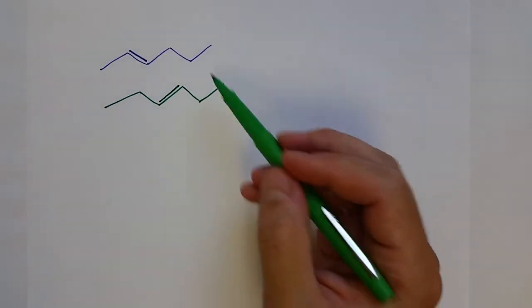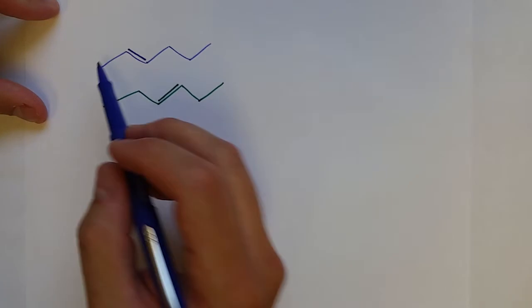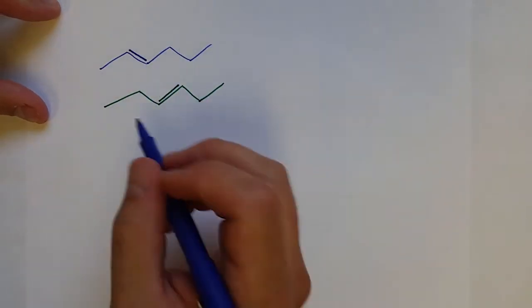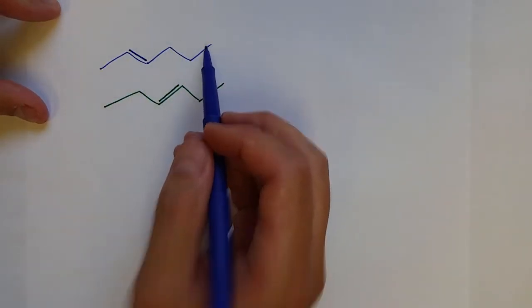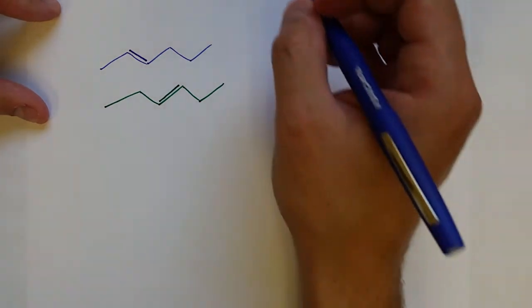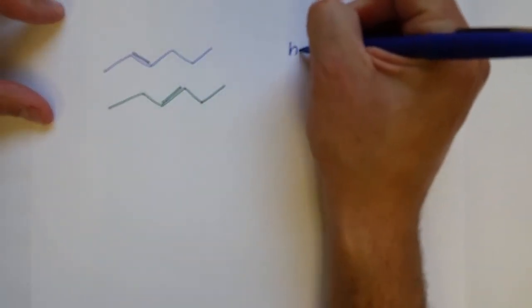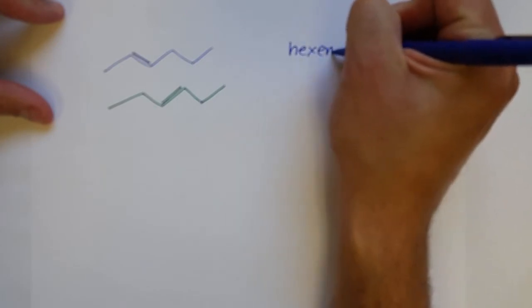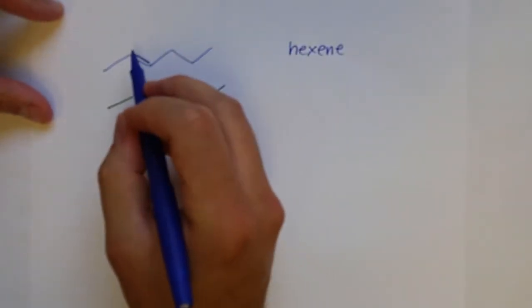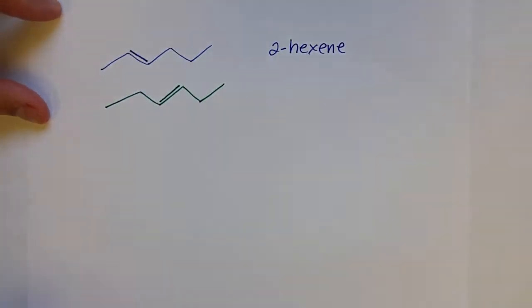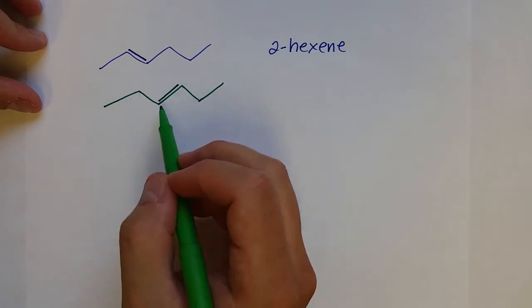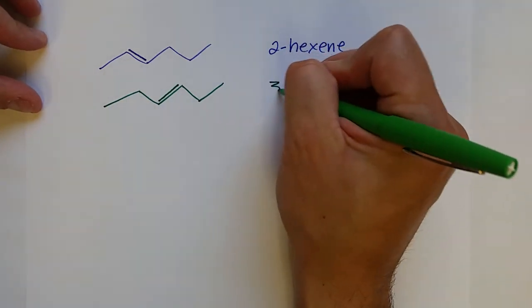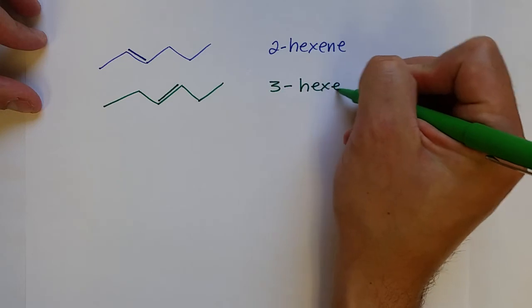We need to be able to name these two different isomers. We count the carbons: one, two, three, four, five, six — so this is hexene. Since the double bond starts on the second carbon, this is 2-hexene. For the second molecule, the double bond starts on the third carbon, so that is 3-hexene.